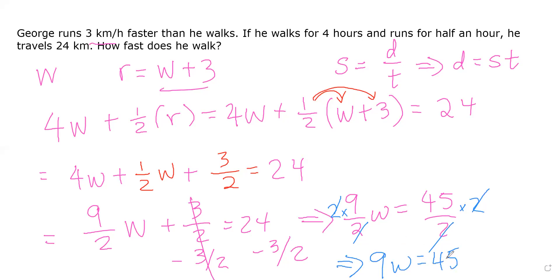If you divide nine on both sides, nine times what number gives you 45? w equals five. So we get that w equals five. How fast does he walk? His speed for walking is five kilometers per hour.